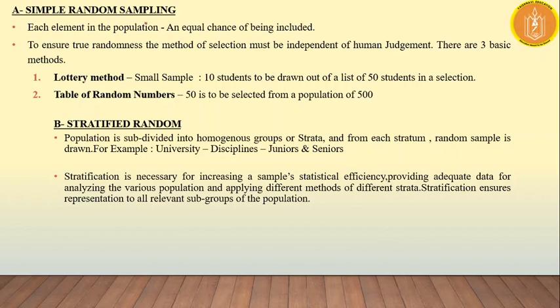What is simple random sampling? It is a probability kind of sampling where every unit in the population has an equal chance. Based on probability, like balls in a box — red, black, yellow, all colors — you randomly remove a ball depending on chance. There are two methods: the lottery method and the table of random numbers. For example, 10 students to be drawn out of a list of 50 — random selection with no bias and no criteria.